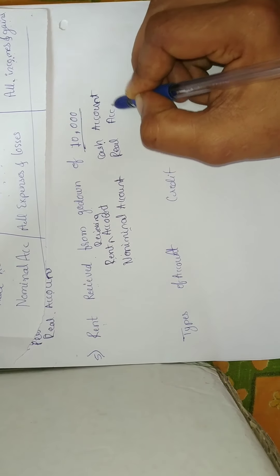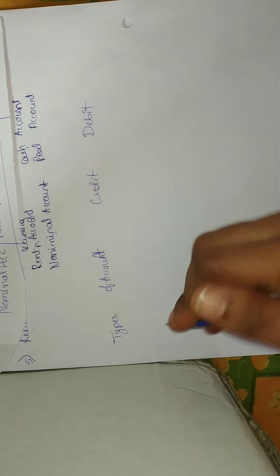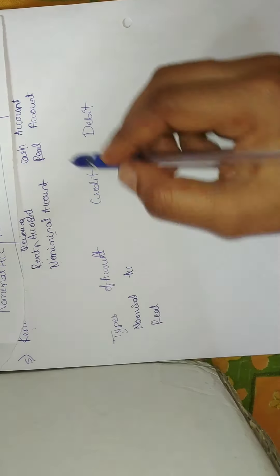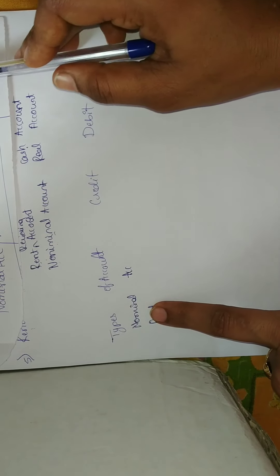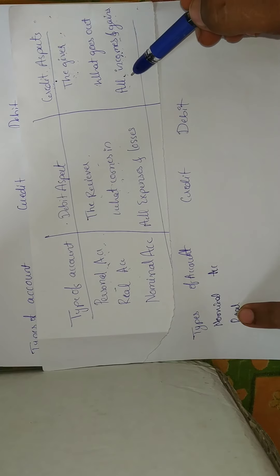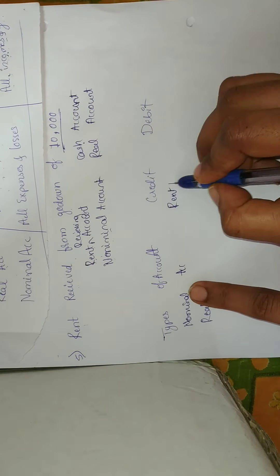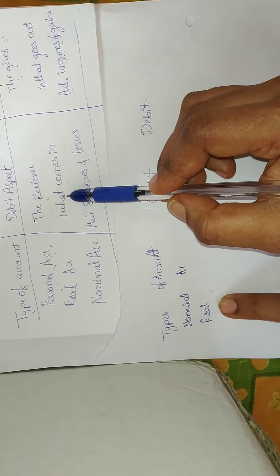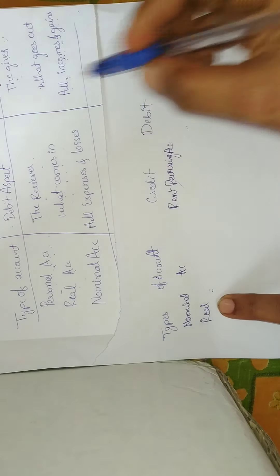Cash account comes under real account. Now applying the golden rules: rent receiving account is a nominal account — rent is a gain for the business, and all incomes and gains come under credit. So rent receiving account is credited. For real account, cash is coming into the business, so what comes in for the business comes under debit. Cash account is debited.